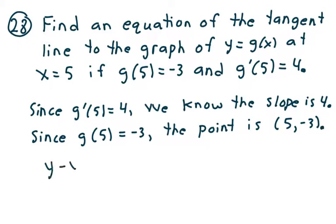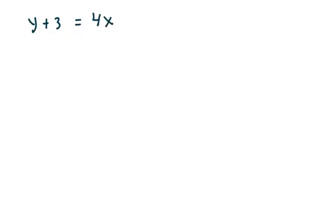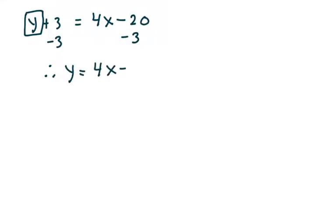Using point-slope form, y minus y₁ equals m times x minus x₁. Here y₁ is negative 3, so y minus negative 3 equals 4 times x minus 5, which gives y plus 3 equals 4x minus 20. Solving for y by subtracting 3 from both sides, we get y equals 4x minus 23.